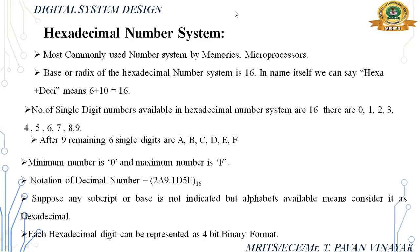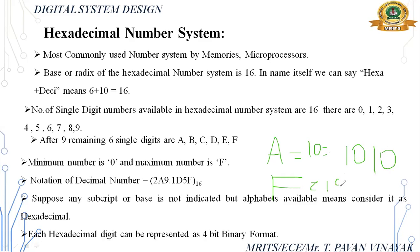For example: A in decimal is 10; 10 in binary is 1010. F means 15; 15 in binary is 1111. So each hexadecimal digit can be represented with a 4-bit binary number.